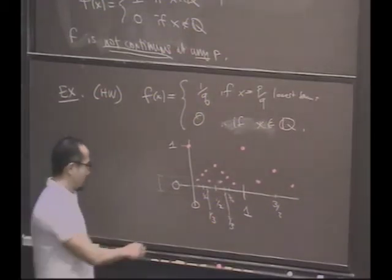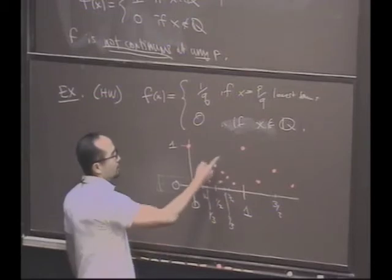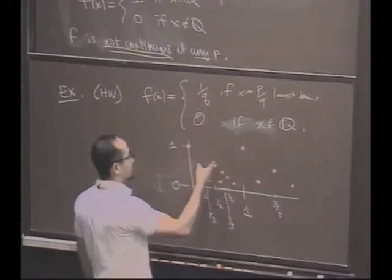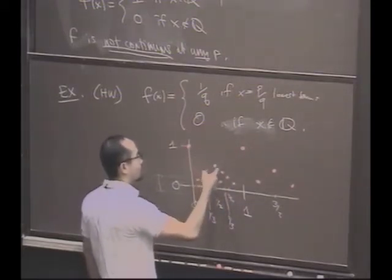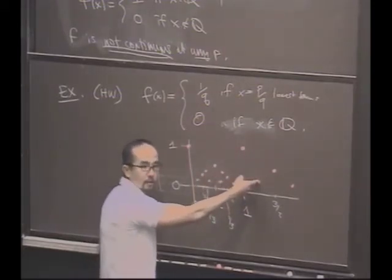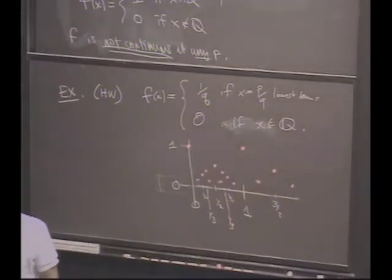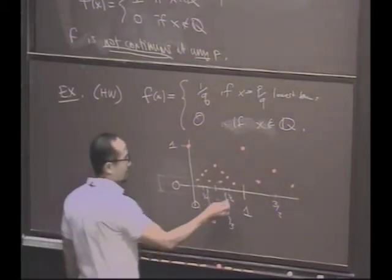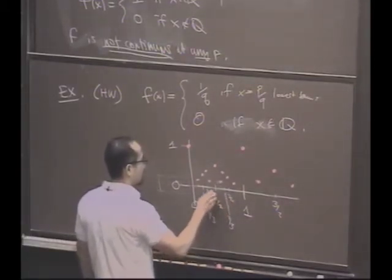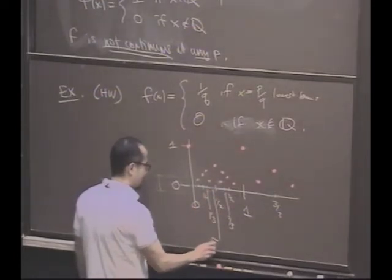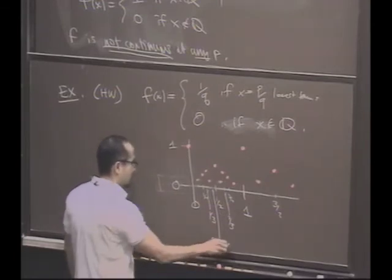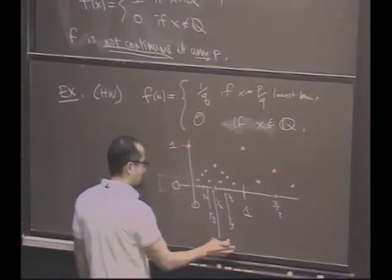So, this function, what is it doing at the rationals? Well, it's doing something non-zero. And would you agree, it's pretty clear at the rationals this thing is not continuous. What's happening at the irrationals? At the irrationals, let's take an irrational value here. How about this point right here? Square root of 2 minus 1. There.